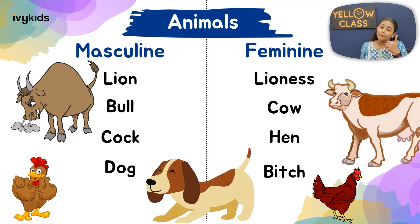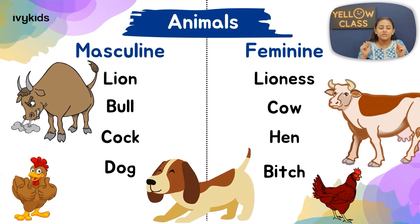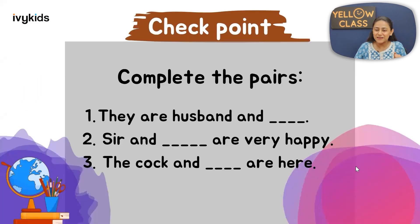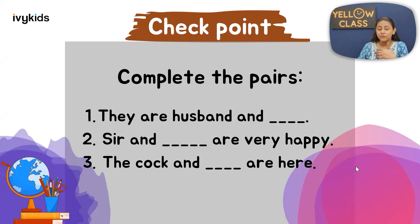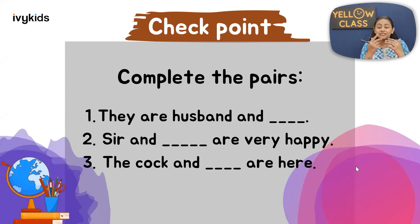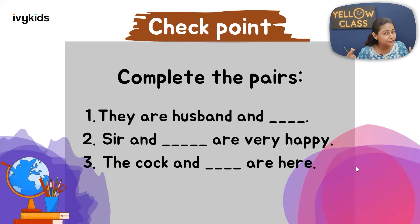Now we are going to test our knowledge with some questions. We have a task: complete the pairs in these sentences. One pair is given and another is missing. I will reveal the answer for the first one, and I want you all to try the second and third questions. Let us read the first question together.